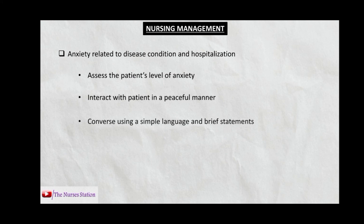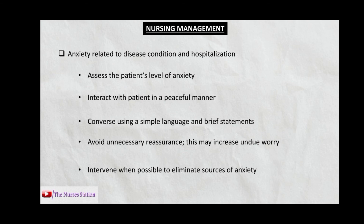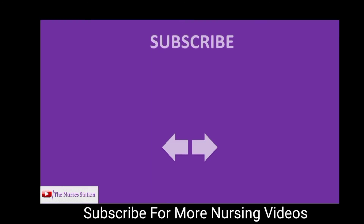The fourth nursing diagnosis is anxiety related to disease condition and hospitalization. Assess the patient's level of anxiety and interact in a peaceful manner. Talk to the patient in simple language with brief statements, and do not give too much information at one time. Avoid unnecessary reassurance, which may increase undue worry. If the source of anxiety is known, intervene to eliminate those sources. That was all about the cardiomyopathies.